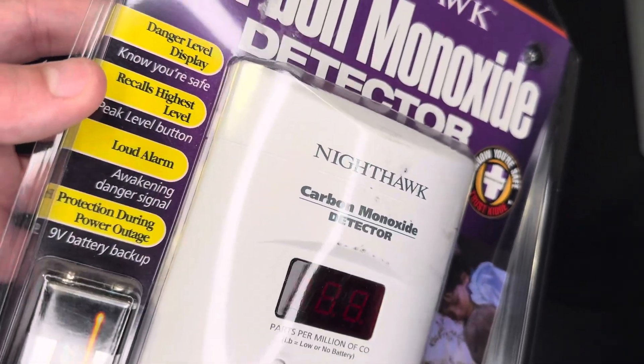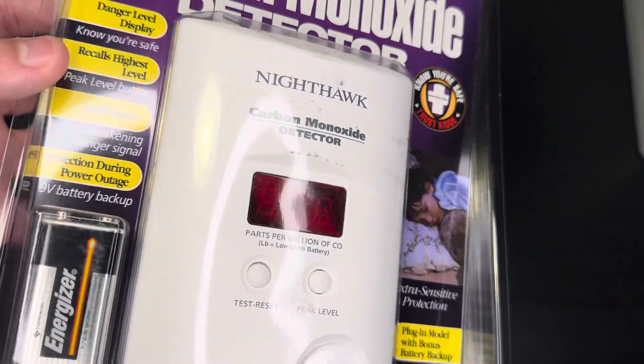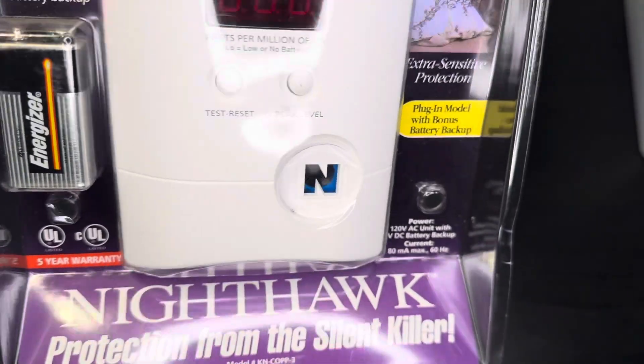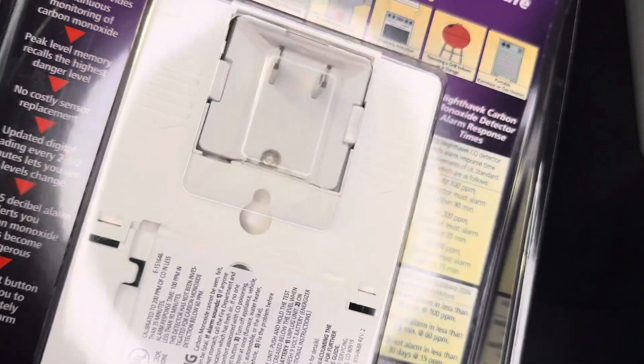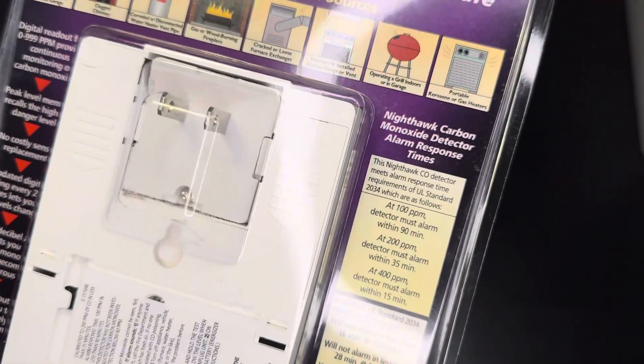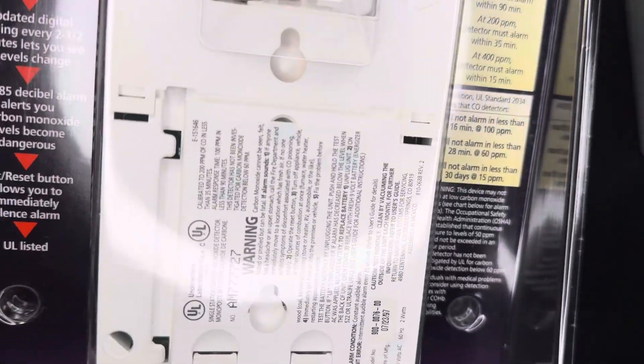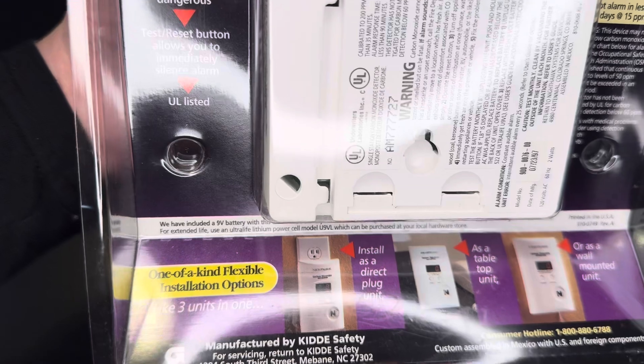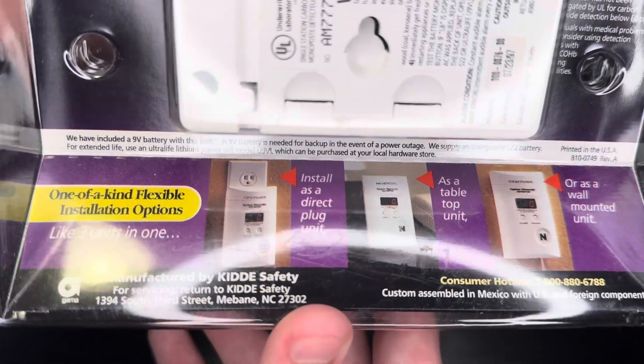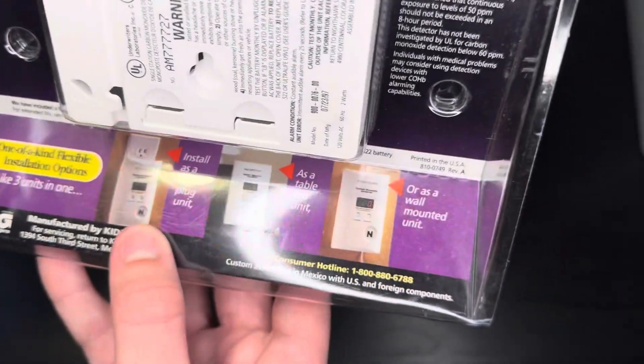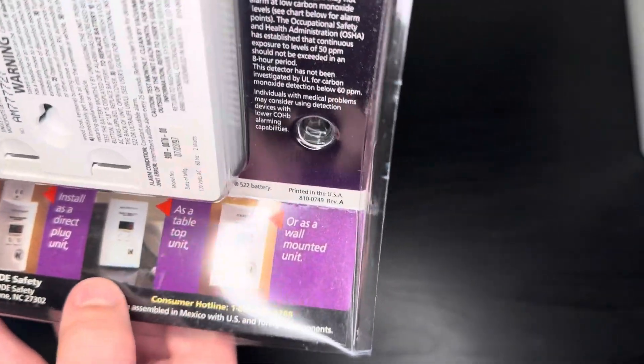Danger level display, peak level, 85 decibel alarm, and battery backup. These ones had five-year limited warranties. When you know you're safe, trust Kidde. UL listed, and that shows the response times there. It says right here it can be installed directly on the plug, a wall mount, or a tabletop unit.